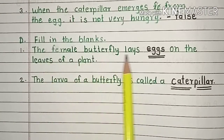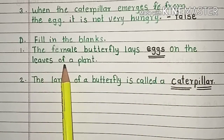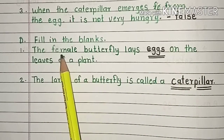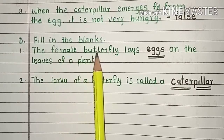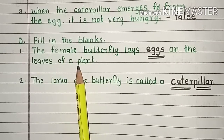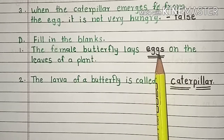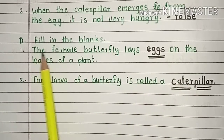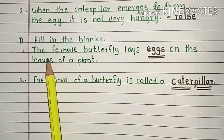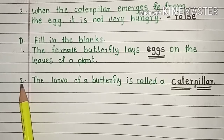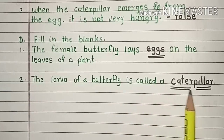Fill in the blanks. Question 1. The female butterfly lays eggs on the leaves of a plant. Question 2. The larva of a butterfly is called a caterpillar.